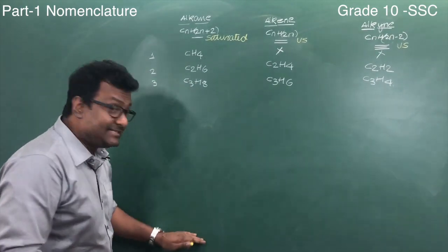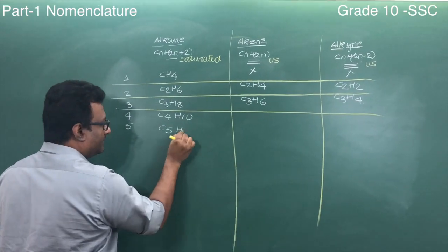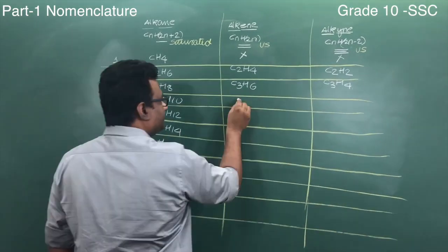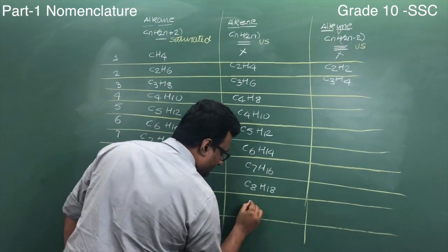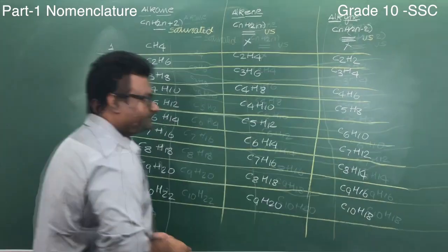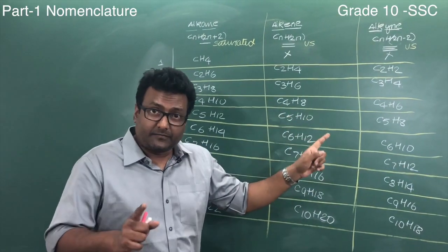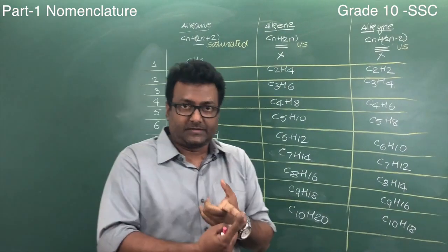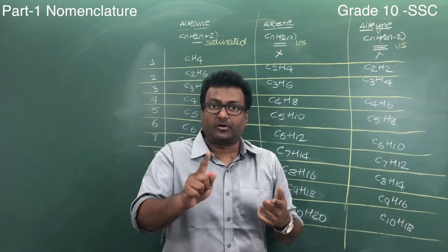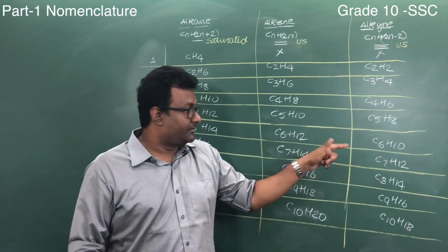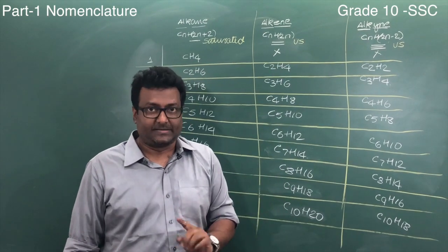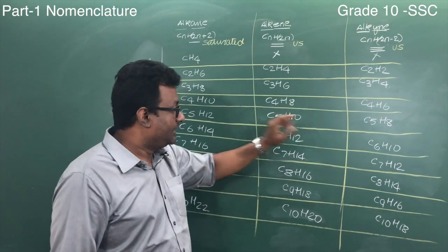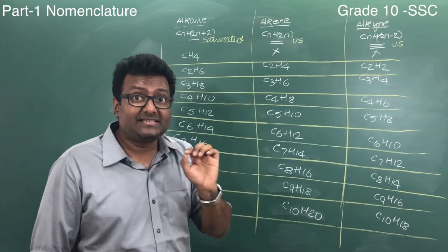So these are the molecular formulas of alkane, alkene, alkyne respectively. What I'm not talking about over here: the branches, I'm not talking of the branch chain, the structure, the position of the double bond, triple bond, I'm not talking about the isomerism. All these we'll discuss in other videos of nomenclature. This is the first video of nomenclature.